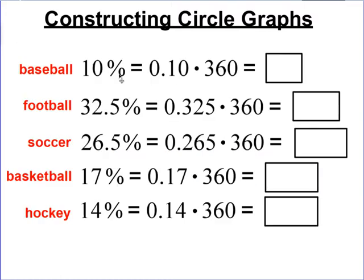So here, if I take my 10 percent, remember from our FDP unit that you slide the decimal point over two spaces to get 0.10. Here, it would be 0.325, 0.265, 0.17, and 0.14. So there's our decimal values. And if we multiply those by 360, that will tell us how many degrees of a circle each sport will take up. Why do we multiply by 360?